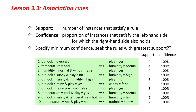Here I've got the same rules, and they all have 100% confidence, but they've got different degrees of support — different numbers of instances. We're looking for high support, high confidence rules. But we don't really want to specify 100% confidence and look for all of those rules, because there are hundreds of them and a lot have very low support. Typically we specify a minimum degree of confidence and seek the rules with the greatest support with that minimum confidence.